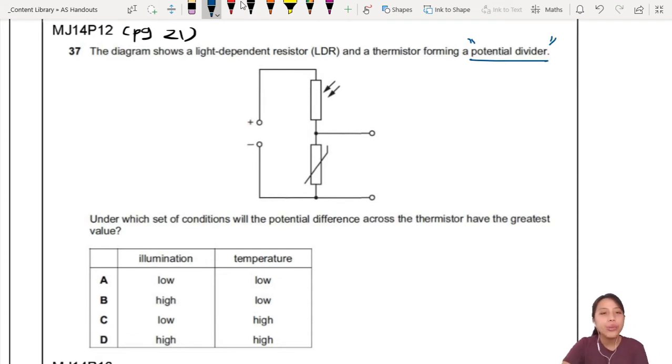Okay, here it is. Under which set of conditions? Well, the potential difference across the thermistor. Which one of the thermistors can recognize? You must remember the symbols. The circuit symbols. You must know which is which.